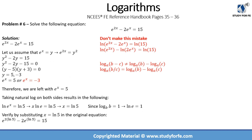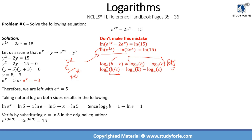Here is a common mistake to be careful about. You might be tempted to take ln on both sides of the original expression e raised to power 2x minus 2 times e raised to power x, and split it using the log subtraction rule. However, log base a of (b minus c) is NOT equal to log base a of b minus log base a of c. That rule only applies to division: log of (b divided by c) equals log b minus log c. Since we have subtraction, not division, in the exponent terms, this approach would be incorrect.